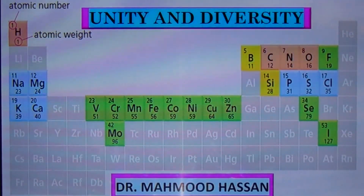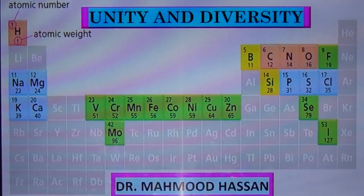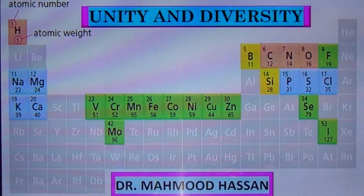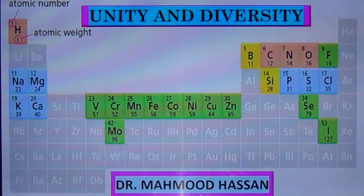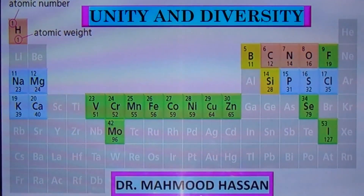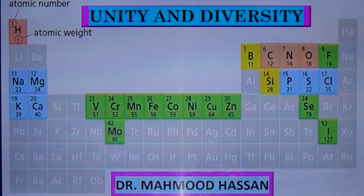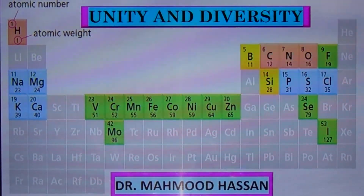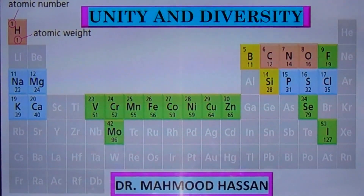Dear students, unity and diversity are two major themes of biology. We will continue to study both these themes in a comprehensive manner. This is just an introductory lecture to show you the meaning of both these things. Unity describes that all living organisms are alike, while diversity explains that despite having the same basic plan, all organisms are different.